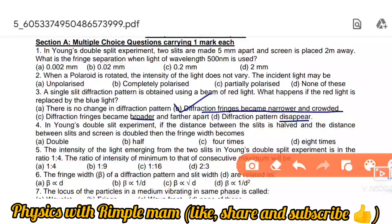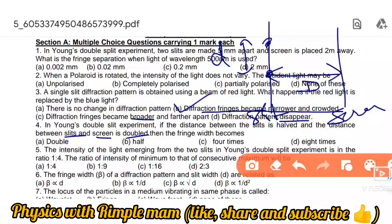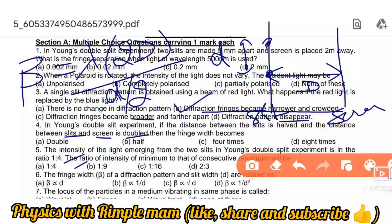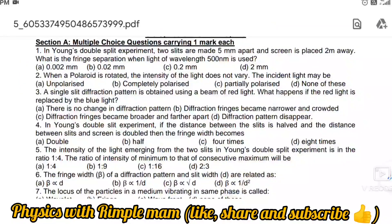Next: In Young's double slit experiment, if the distance between the slits is halved and the distance between the screen and slits is doubled, what happens? Beta equals lambda capital D over small d. If we halve small d and double capital D, we get four times lambda D over d. So it increases four times.